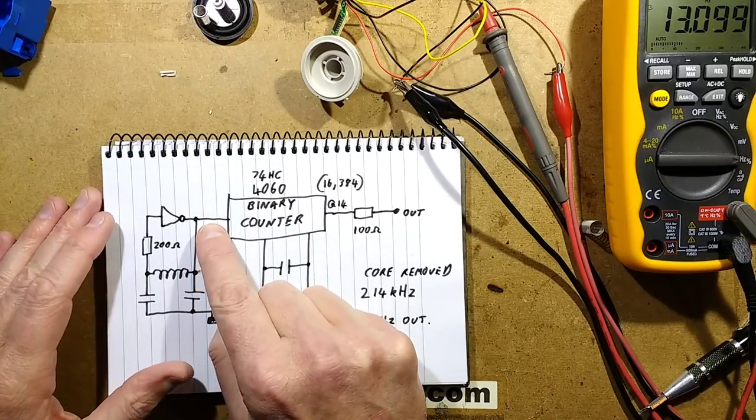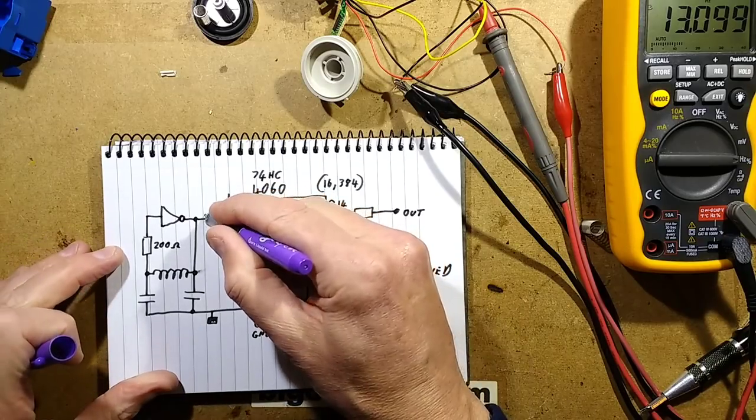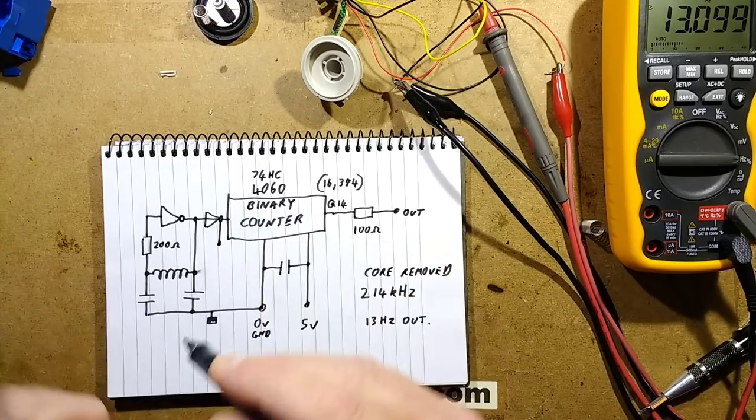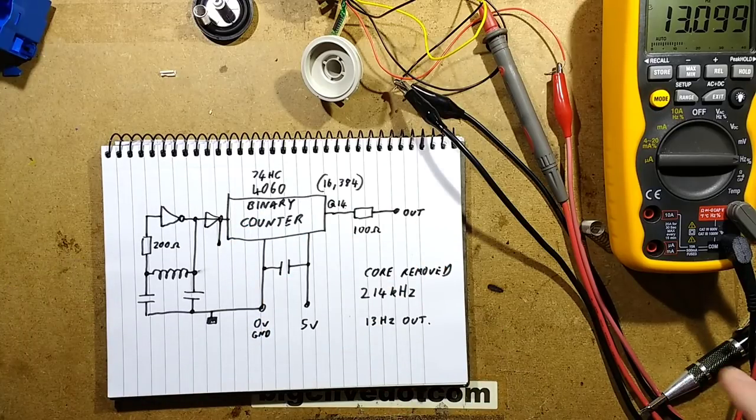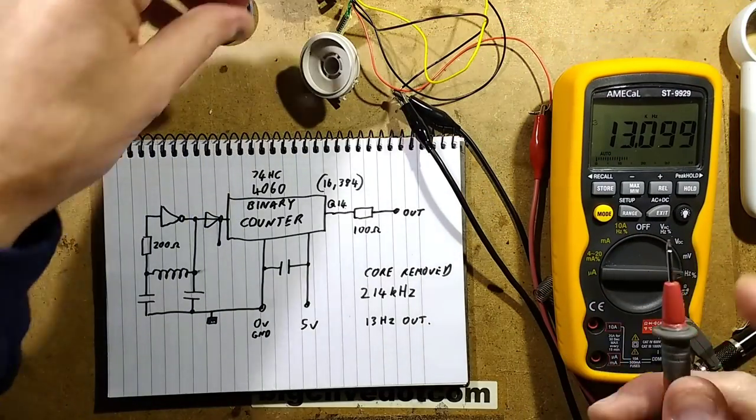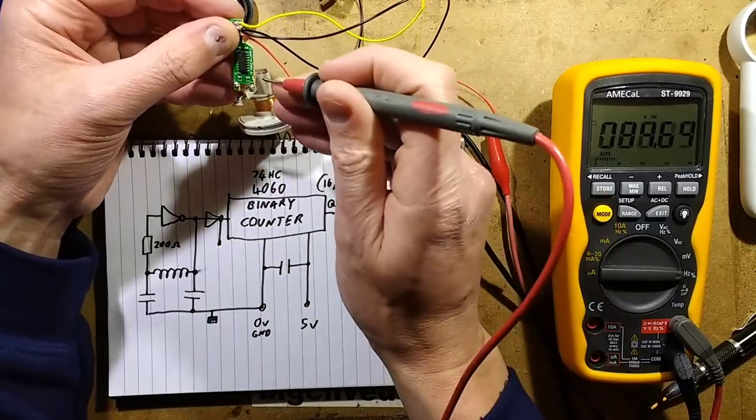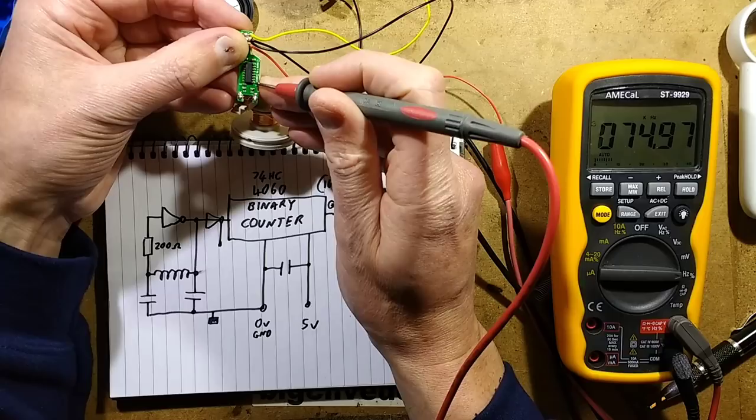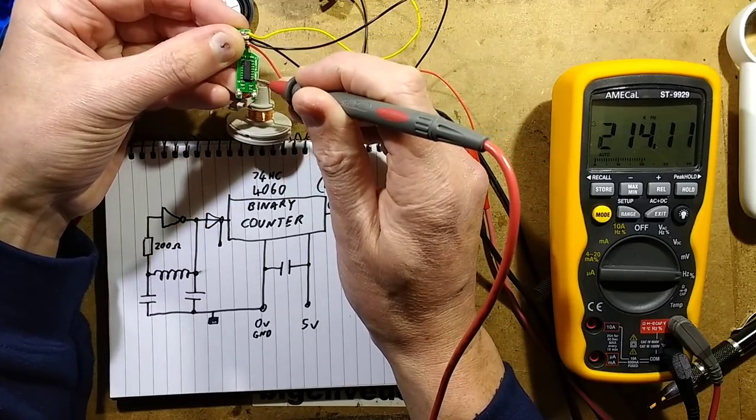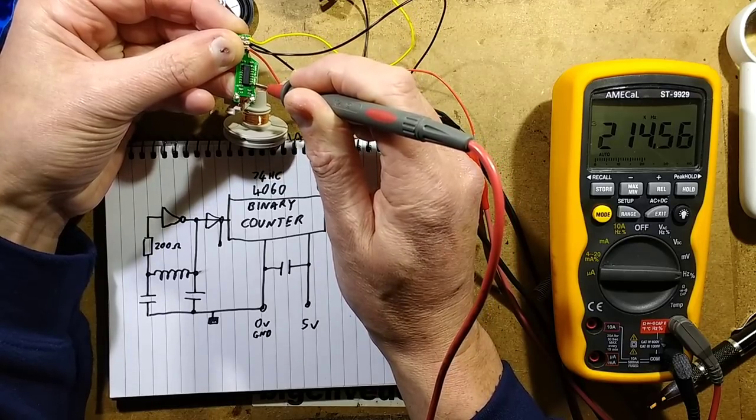This does have an extra gate in here which can be used. I shall take this probe off here, bring the meter back into shot, and I shall probe the buffered output of that because that won't affect the oscillator frequency. You'll see that with the core out, that's about 12 hertz it's putting out. If I touch the probe onto that, it goes to about 214 kilohertz.